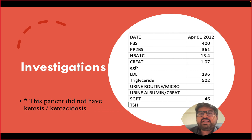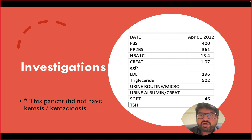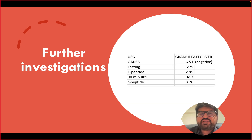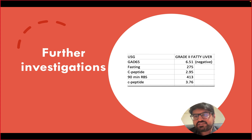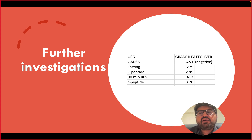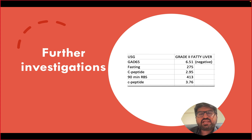He has a strong family history of diabetes; his father was diagnosed at age 47. His BMI is 27.6. At presentation: very high fasting blood sugar, HbA1c of 13%, normal creatinine, high LDL and triglycerides. Importantly, he did not have ketosis or ketoacidosis — which is against type 1 diabetes. A GAD antibody was negative and a mixed meal stimulation test confirmed sufficient C-peptide, so this patient was labeled as type 2 diabetes.